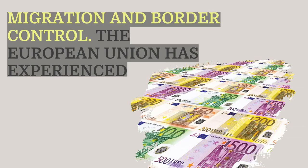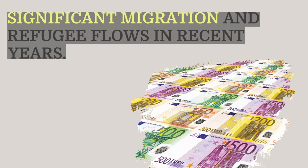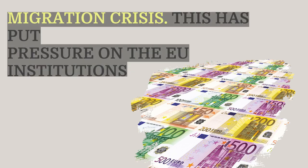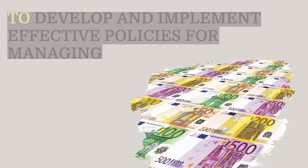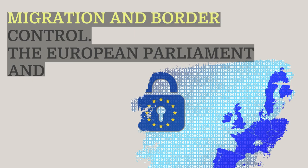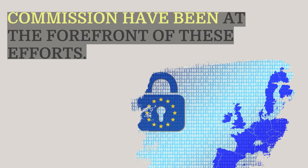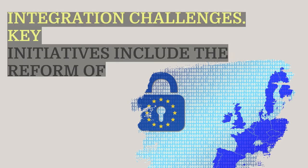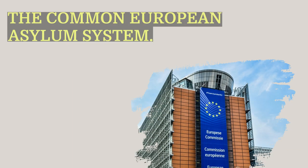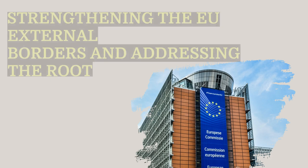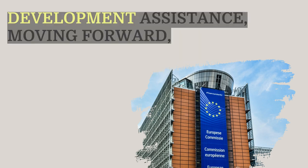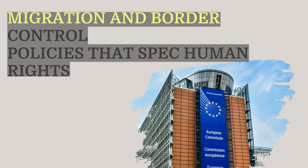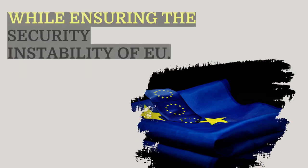The European Union has experienced significant migration and refugee flows in recent years, particularly during the 2015–2016 migration crisis. This has put pressure on the EU's institutions to develop and implement effective policies for managing migration and border control. The European Parliament and Commission have been at the forefront of these efforts, working to balance humanitarian concerns with security and integration challenges. Key initiatives include the reform of the Common European Asylum System, strengthening the EU's external borders, and addressing the root causes of migration through international cooperation and development assistance.